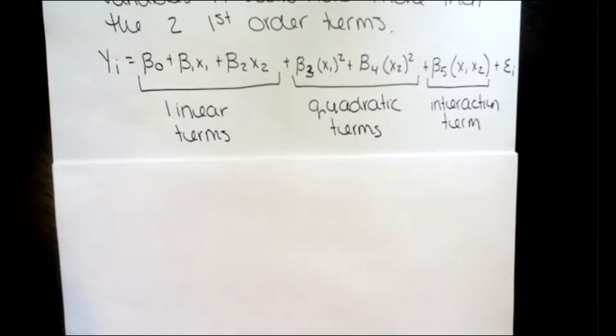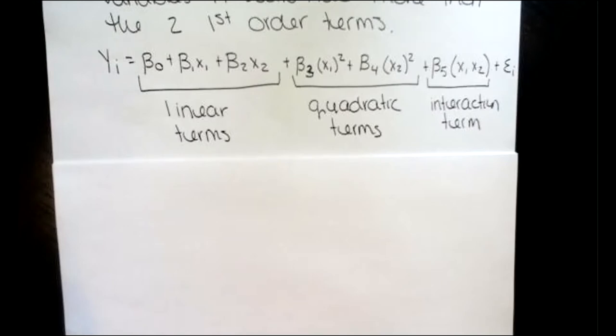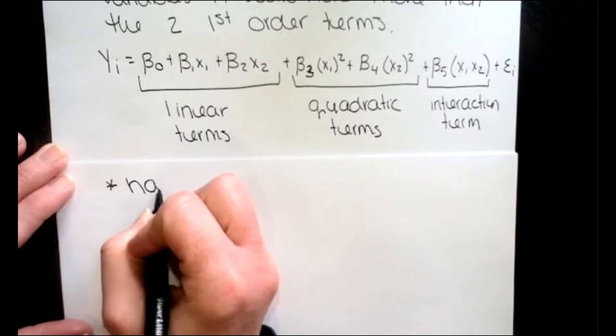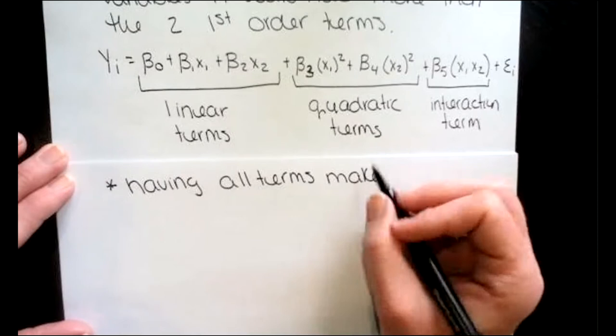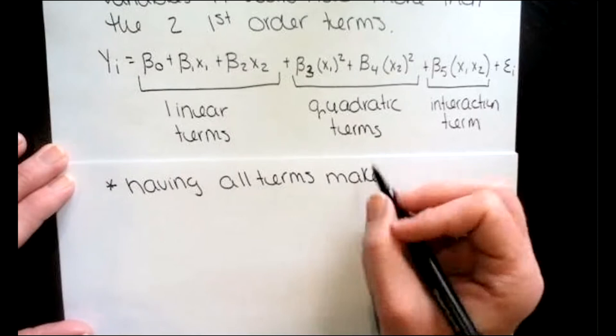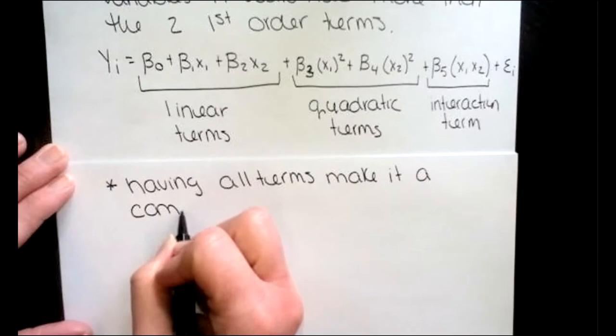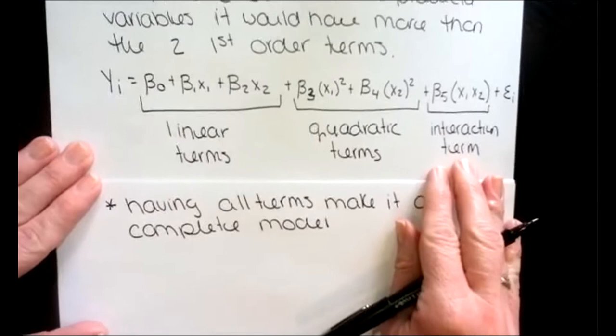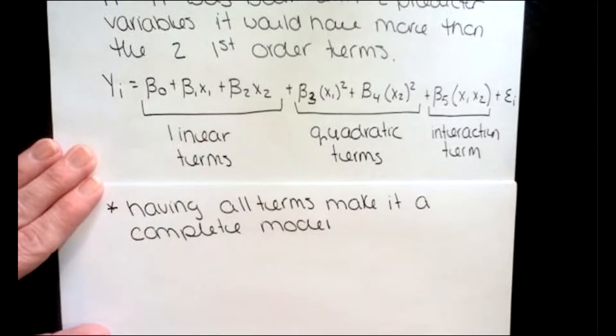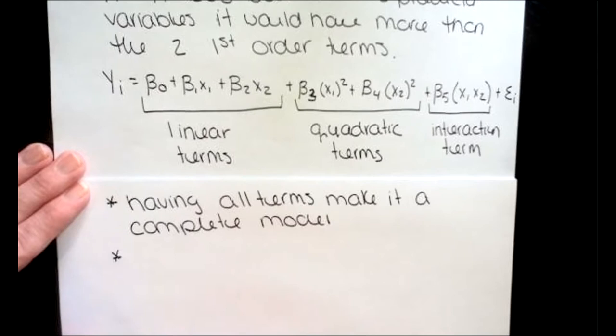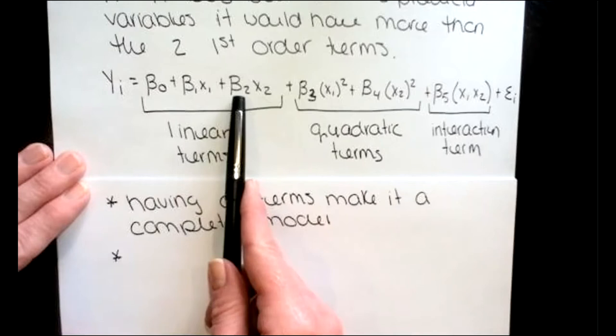The second-order model having all terms makes it a complete model. The number of predictors dictates how many terms we have. With two predictors this is how large the model gets. Imagine adding a third predictor — you get a third linear term, another quadratic term, and several more interaction terms.